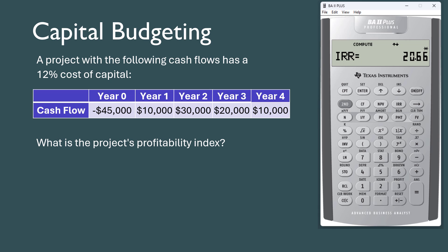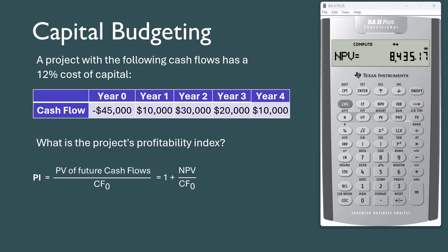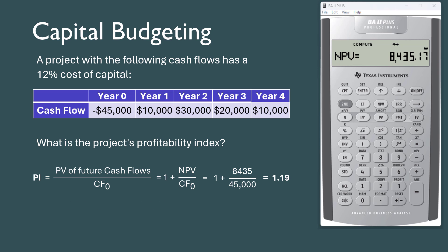Finally, the profitability index PI is the present value of cash inflows divided by the initial cash outlay CFO, which equals 1 plus NPV over CFO. That gives 1.19. Since the profitability index is greater than 1, we again accept the project. Note that if NPV were negative, PI would be less than 1, and we would reject the project.